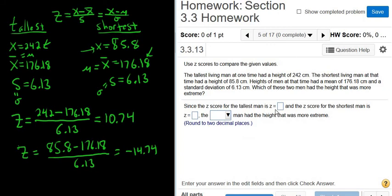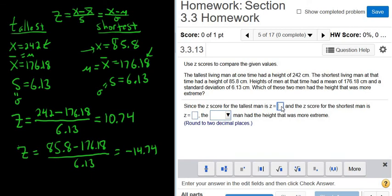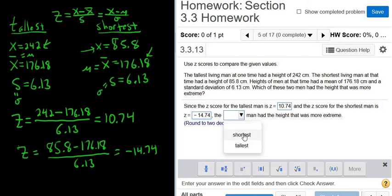So since the z-score for the tallest man is 10.74, and the z-score for the shortest man is negative 14.74, the blank man had the height that was more extreme. So the shortest man is more extreme, right? It's farther away from 0 than this one. So it should be the shortest man had the height that was more extreme.